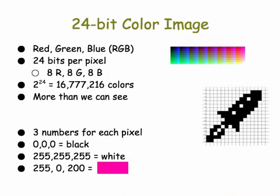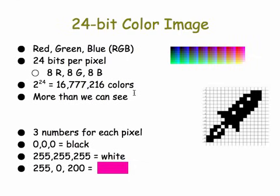Moving up to modern color representations, which are 24-bit, we can get an even better result. We still use the red, green, and blue mixture, but now we use 24 bits per pixel — 8 red, 8 green, and 8 blue bits. That gives us 2 to the 24th, or about 16 million colors, which is more than the eye can see. That's why some compression techniques can reduce file size without the data loss being noticeable. With 24-bit RLE we need three numbers for each run: the R, G, and B values plus the number of pixels in the run. So 0, 0, 0 is black; 255, 255, 255 is white; and a color like magenta might be 255, 0, 200.